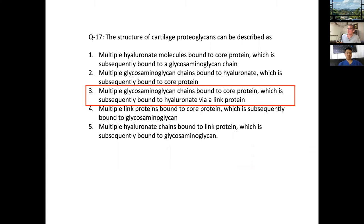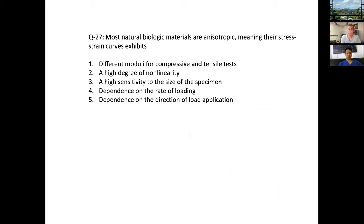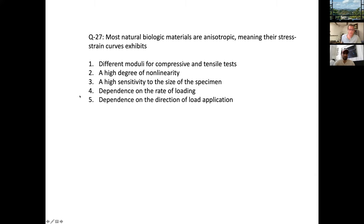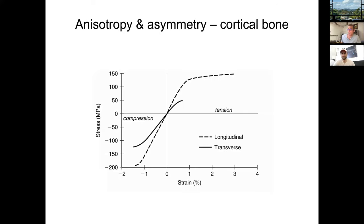Most natural biologic materials are anisotropic, meaning their stress-strain curve exhibits which of the following behaviors? A resident answers: anisotropic materials depend on the direction of load application — number five. Let's look at this. There are two things to distinguish: anisotropy versus asymmetry. In this stress-strain curve, loading in tension is on the right, compression on the left.